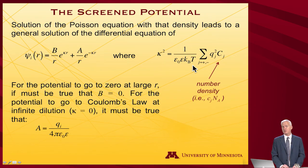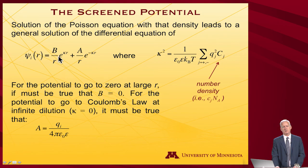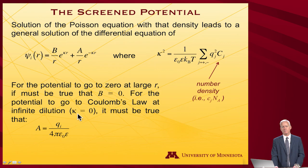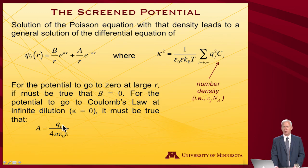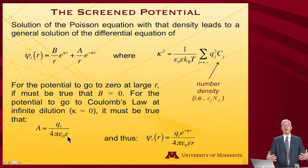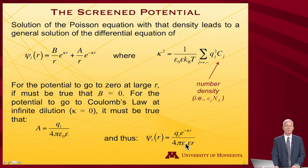For the potential to go to zero at large r — as required by physics — the constant B must be zero, because e to the positive kappa*r grows faster than 1/r vanishes. Setting B to zero and applying Coulomb's law at infinite dilution to determine A, we find that A equals the charge on the central ion divided by 4*pi*epsilon_0*epsilon. The final result is: psi equals q_i times e to the minus kappa*r, all over 4*pi*epsilon_0*epsilon*r.